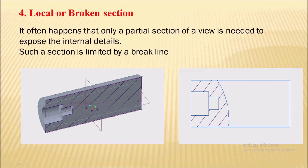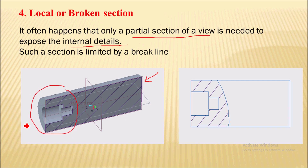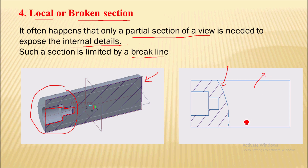Next is the local or broken section, also called a partial section. A partial section of a view is used to expose internal details. Here you can see a cylindrical component cut by a cutting plane. There are internal visible details in a particular portion, so only that portion is shown as a section view. That is called a local or broken section because only that portion has the internal invisible details. This section is limited by a break line, and the remaining portion of the view is shown as a normal view since there are no internal invisible details to show there.